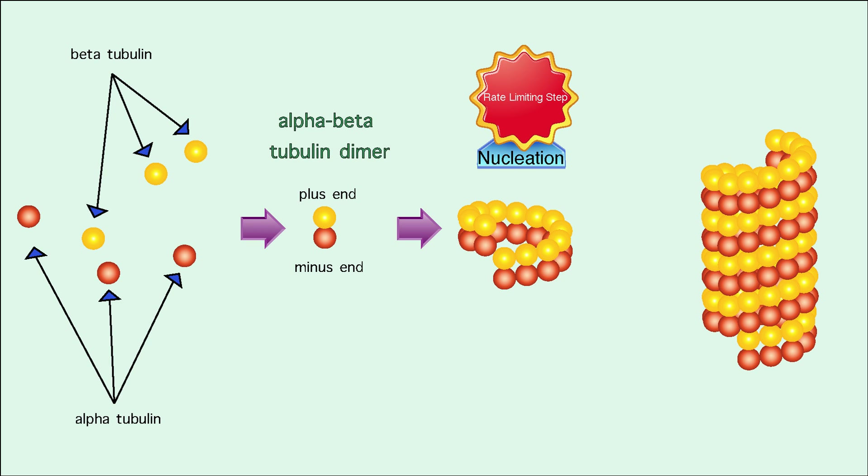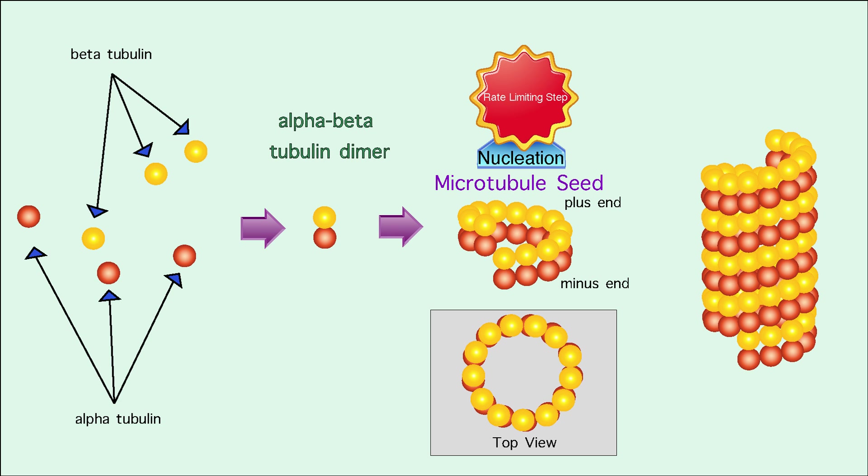In a rate-limiting step called nucleation, several dimers bind together forming a hollow ring called the microtubule seed. The dimers align so that all the alpha tubulin tails are on one side, called the minus end, and all the beta tubulin heads are at the other, called the plus end.